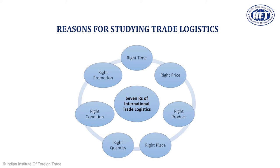Then right place — where to sell, which we must know. Right quantity — economic lot size and inventory management issues. Right conditions. These are the seven Rs which help us understand the reasons why we should undertake logistics very seriously.